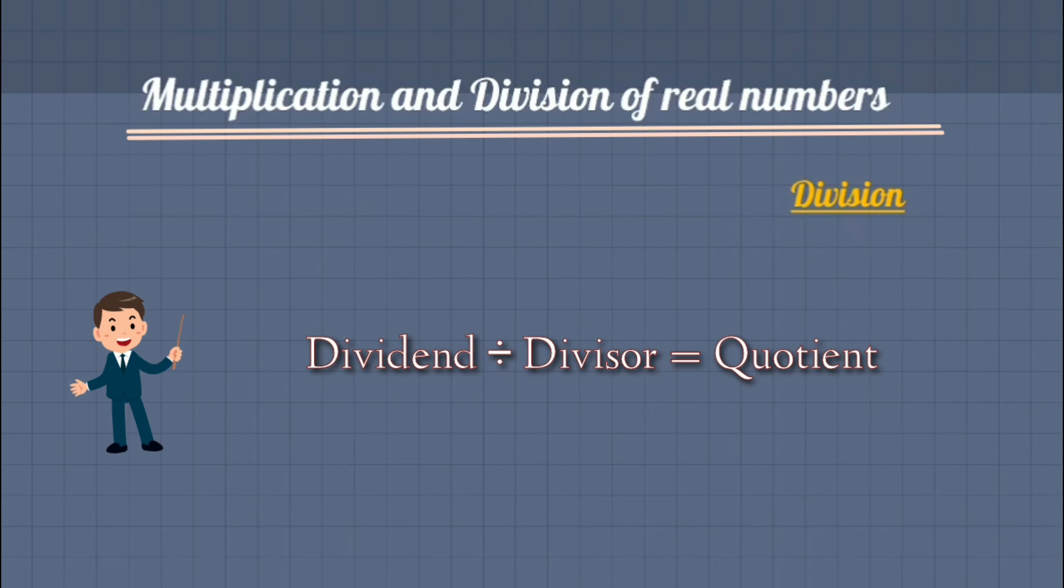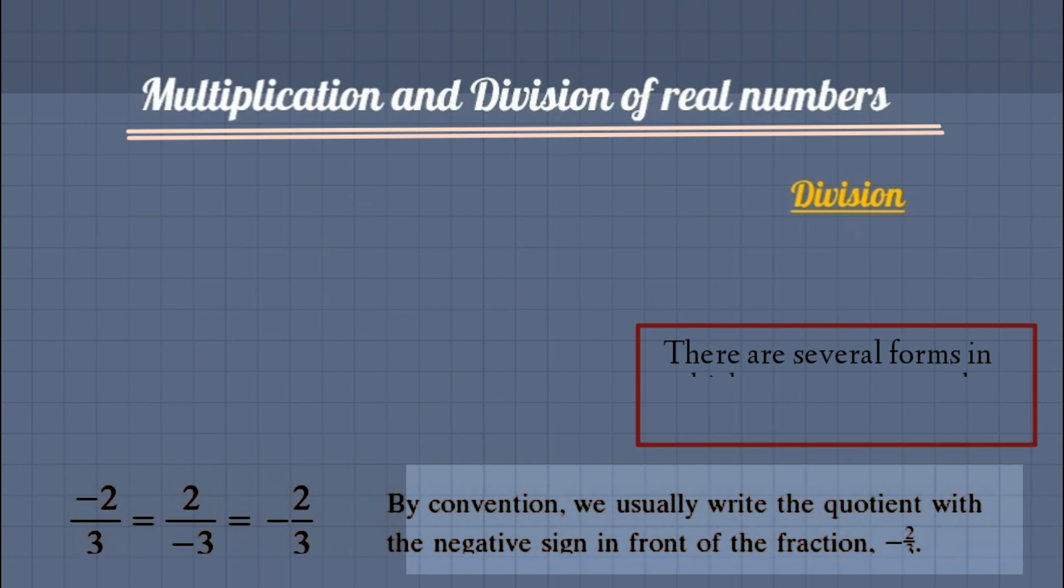A number to be divided by another number is called dividend. Number by which other number divided is called divisor. And the result of division is called quotient. Division can be presented in several ways just like that.